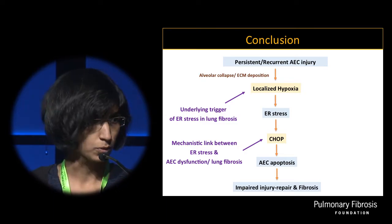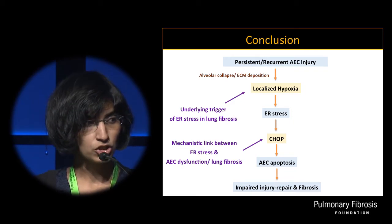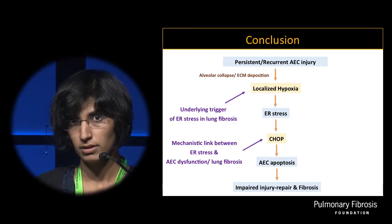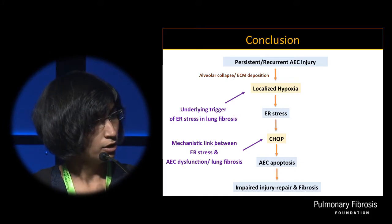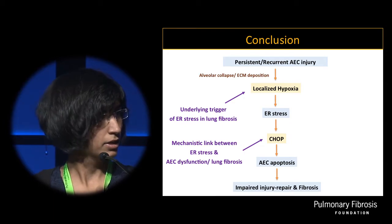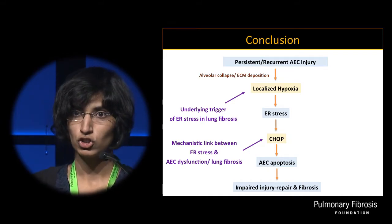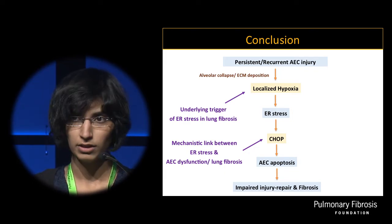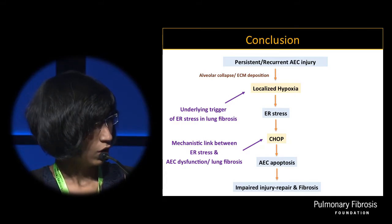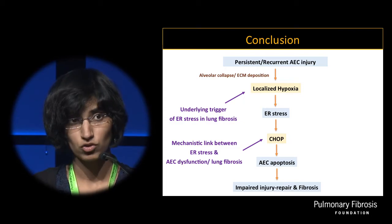In conclusion, after a recurrent injury, we think tissue hypoxia arises in the injured parenchyma. Tissue hypoxia then augments ER stress, and ER stress mediator CHOP kills type 2 AECs and ultimately worsens fibrosis. We have shown that intervention in the ER stress pathway attenuates fibrosis. We have found CHOP to be a molecular mechanistic link between ER stress and AEC dysfunction, and we think it can be pursued in future studies as a therapeutic target. We also suggest localized hypoxia as a potential inducer of the ER stress seen in IPF.